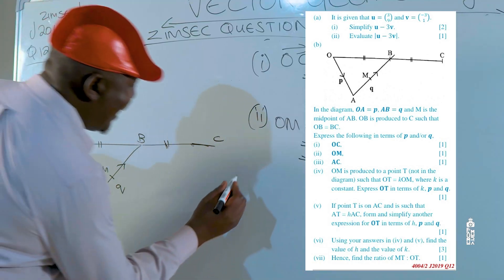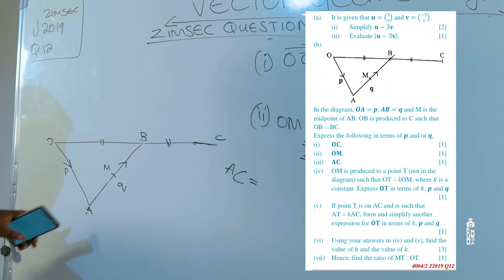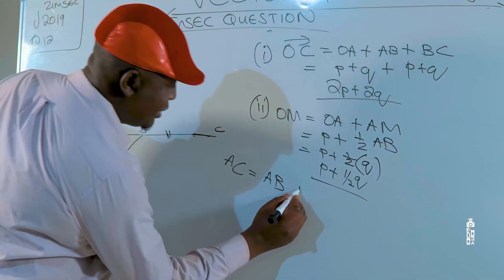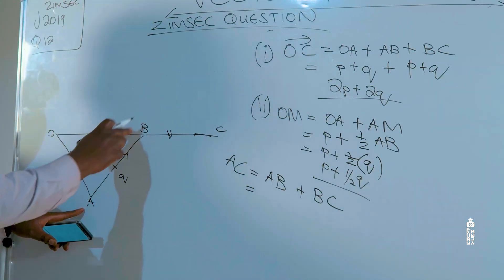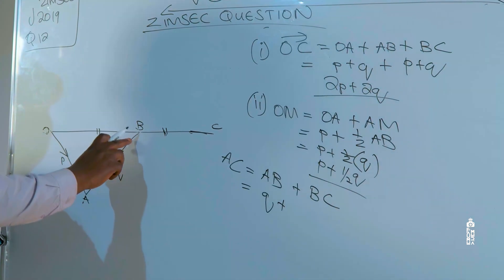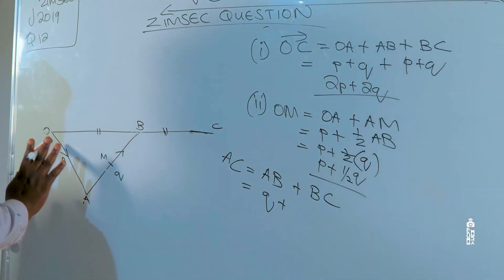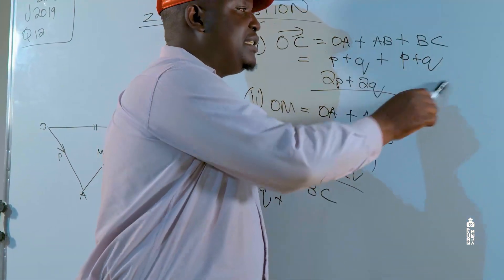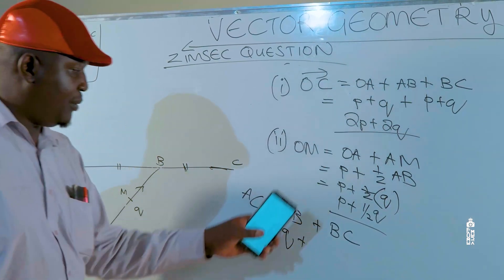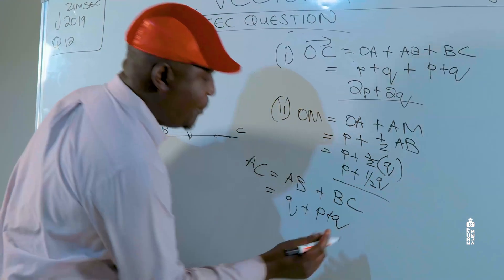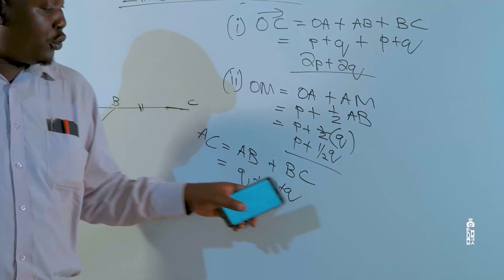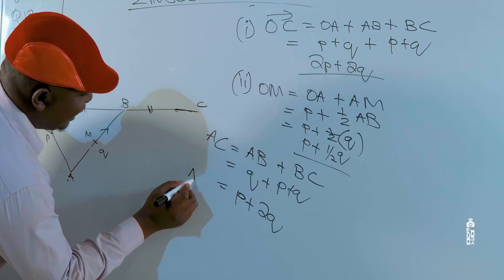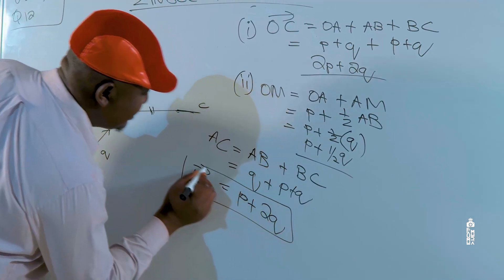Next question: find vector AC. Vector AC from A to C is AB plus BC. Vector AB is Q, plus vector BC. Remember vector BC equals OB which is P plus Q. So this is Q plus P plus Q. Grouping like terms, we have P and two Qs, so vector AC is equal to P plus 2Q.